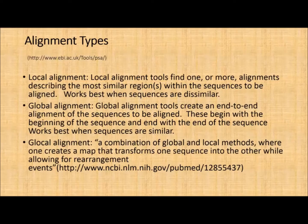What are the different types of alignments? There are local alignments where you don't focus on the entire sequence. We are talking about protein sequences — 300 amino acids long, 500 amino acids, 1200 amino acids long.